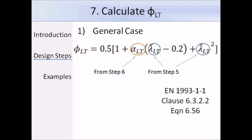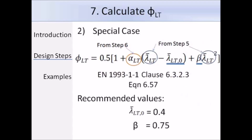Expression 6.57 is used to calculate phi LT for rolled sections. This expression is similar to 6.56 except that there are two additional terms: lambda bar LT0 and beta. The UK National Annex indicates that for rolled sections lambda bar LT0 should be taken as 0.4 and beta should be taken as 0.75. Again, it is just a matter of substituting in the values.